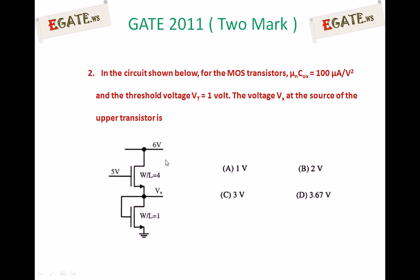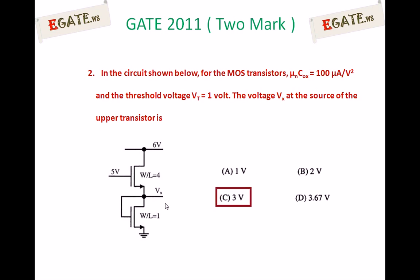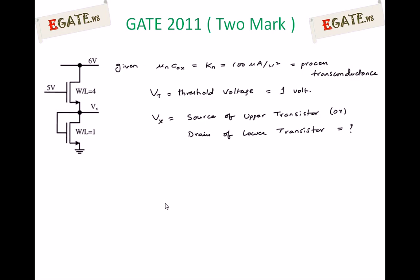The input power supply is 6 volts. We need to calculate the value of Vx — whether it is 1 volt, 2 volts, 3 volts, or 3.67 volts. The right answer for this question is 3 volts. Vx is the output voltage, which is the source of the upper transistor or equivalently the drain of the lower transistor.